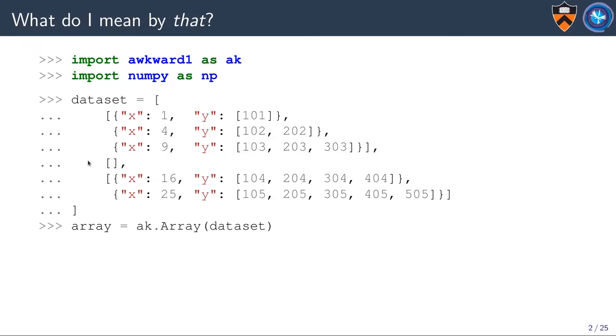Suppose that you've got a dataset that is essentially like JSON. You can have variable length lists, objects with fields, and arbitrary nesting structures. We want to represent this as a kind of array, scaling it up to something huge, and we want that array to have NumPy-like features.